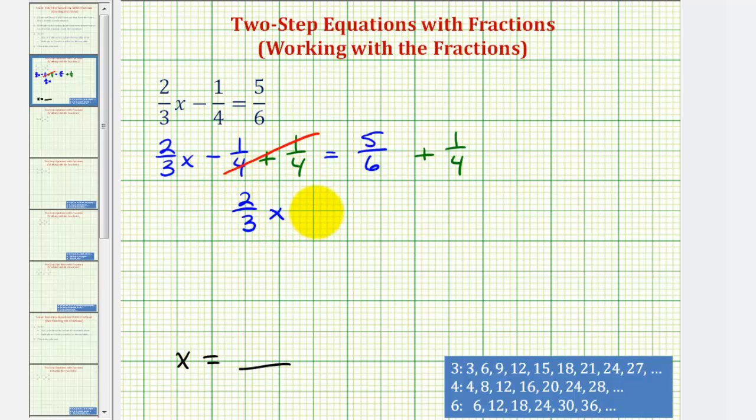On the right side, we have five-sixths plus one-fourth. To perform this addition, we'll have to obtain a common denominator, hopefully the least common denominator. When we have a denominator of four and six, the least common denominator will be the least common multiple of four and six, or the smallest number that's divisible by both four and six.